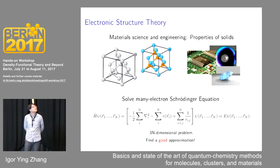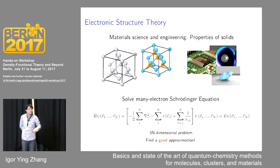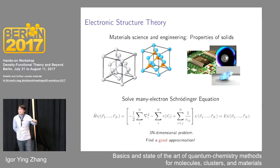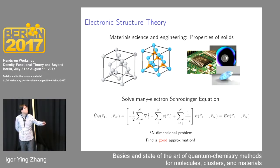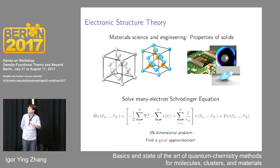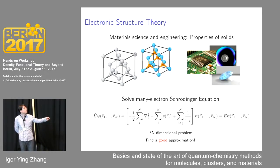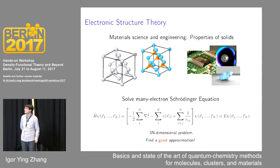In computational material science, we want to know the electronic structure information of materials. This is very crucial for a better understanding of properties and better design of specific devices. In principle, we can answer this question by solving the many-electron Schrödinger equation. This is the key message you have got from many previous talks in this workshop. However, it is a very hard task because solving this equation is a many-dimensional problem, so we need to find a good approximation.